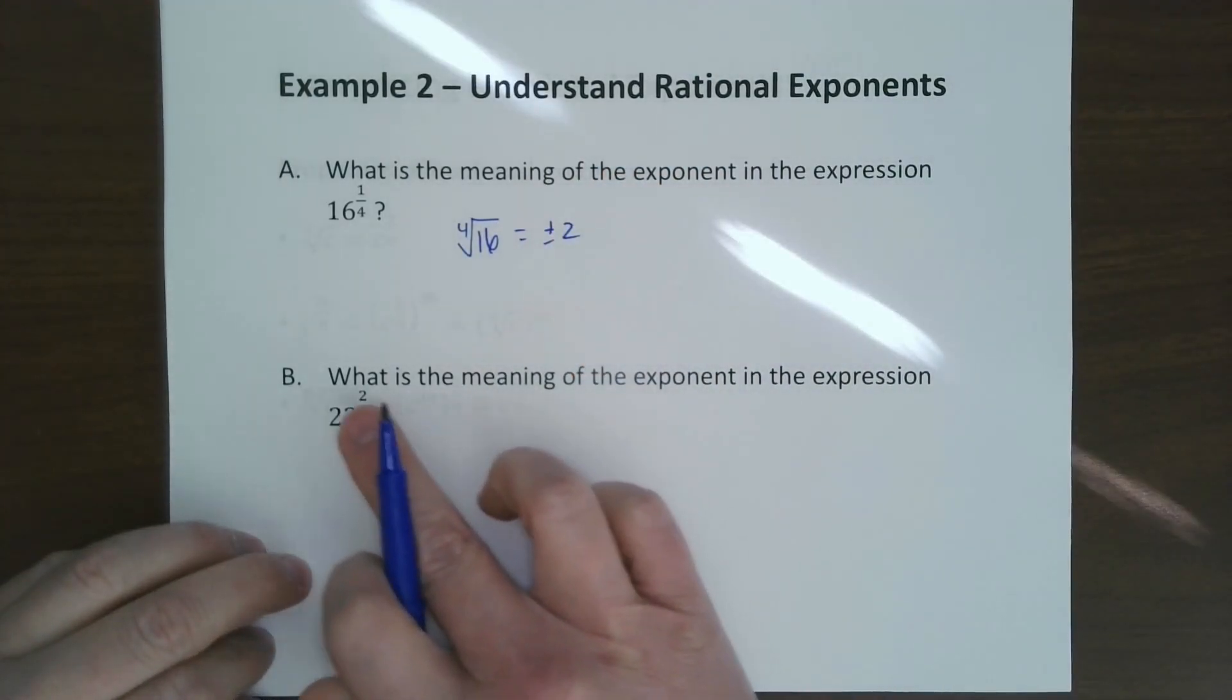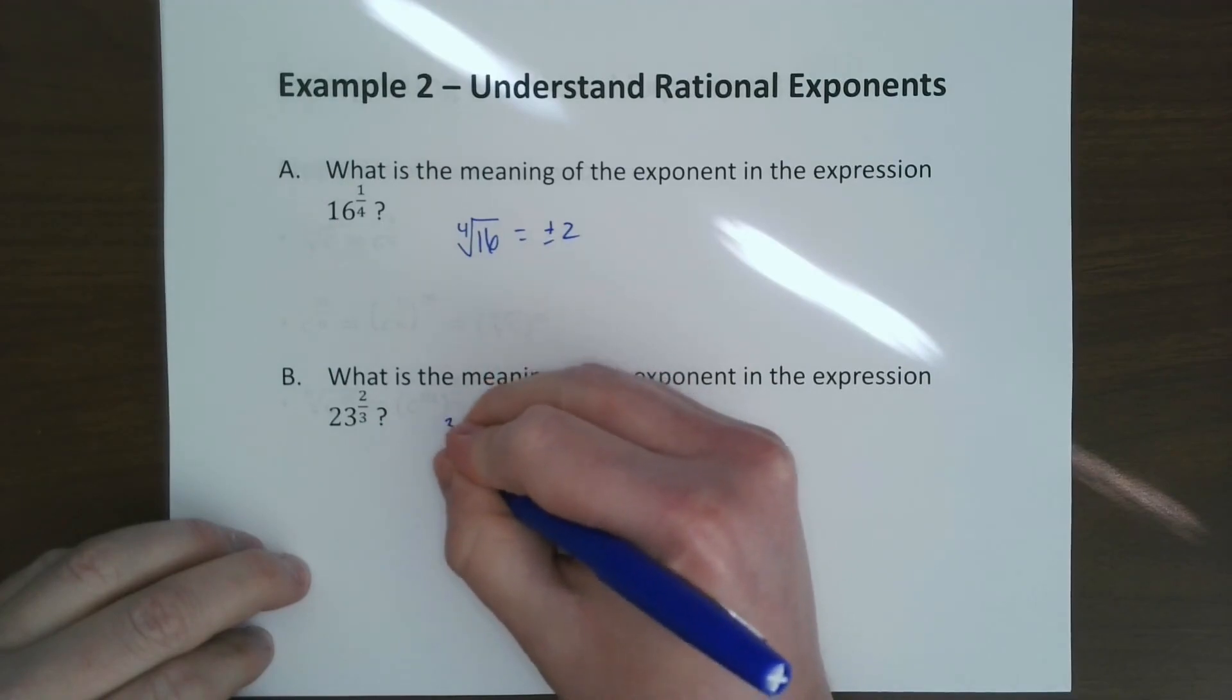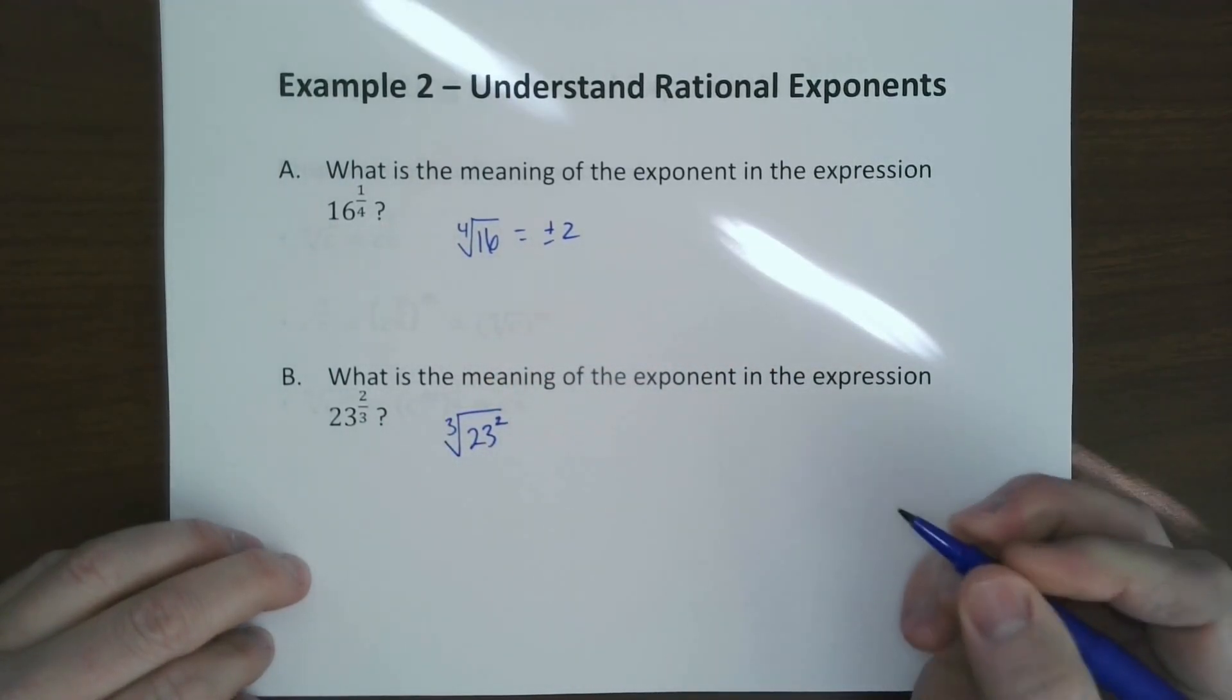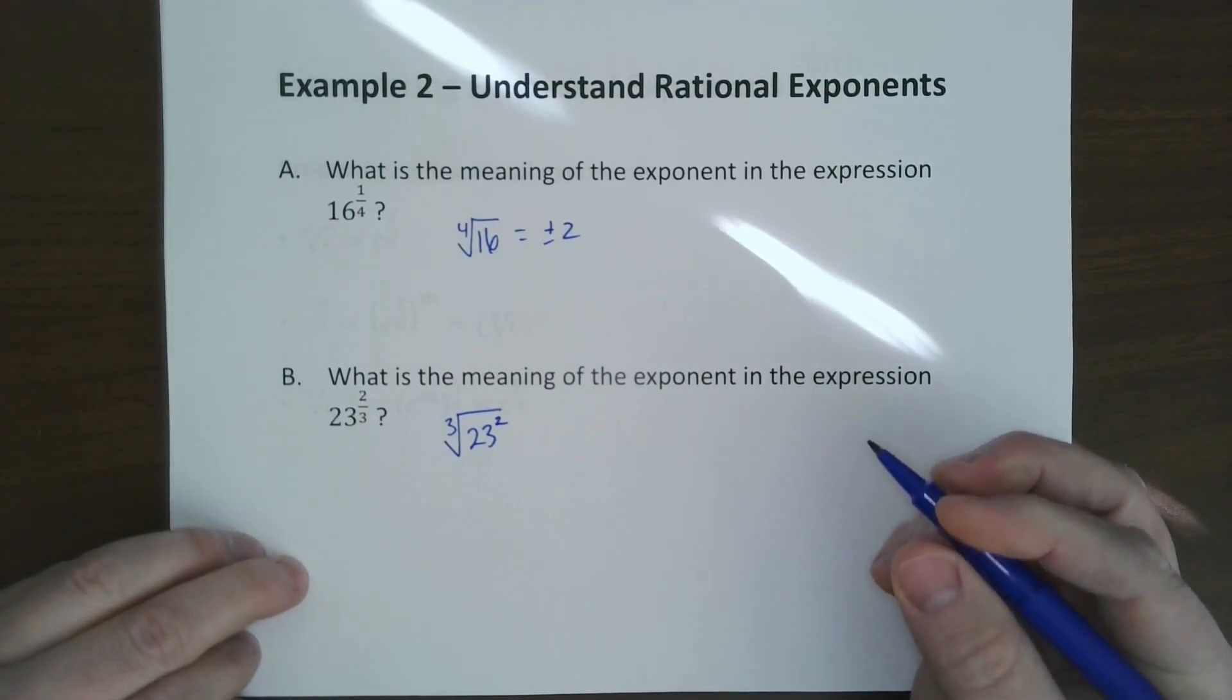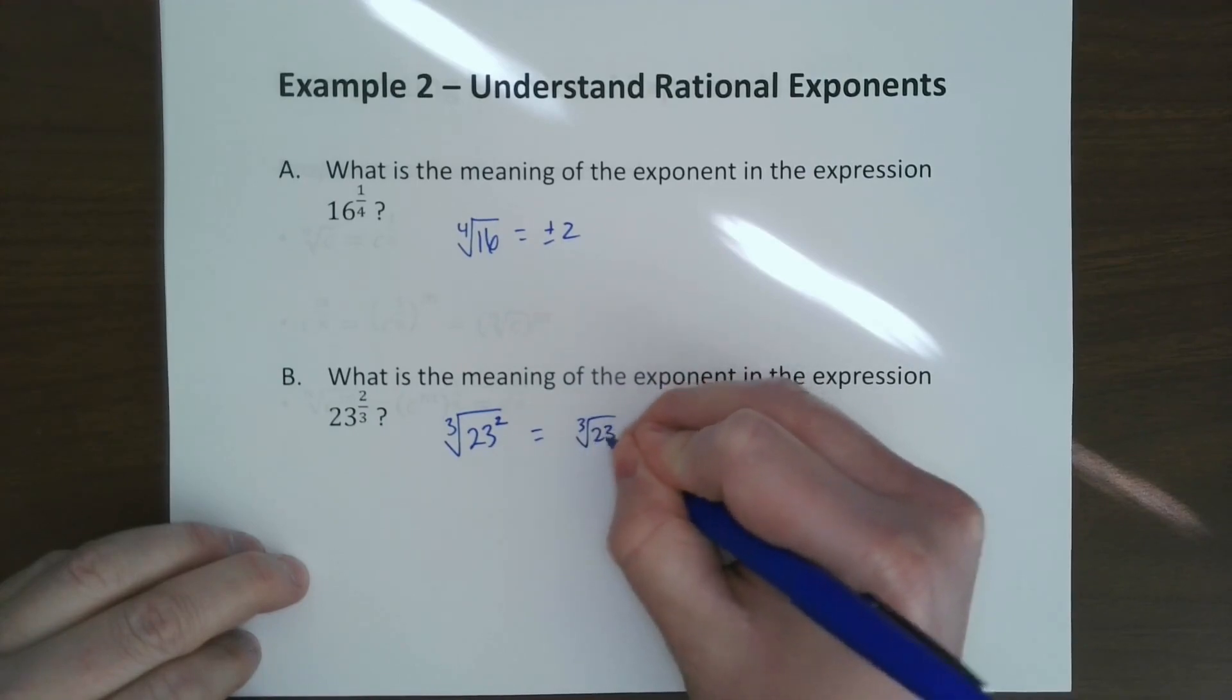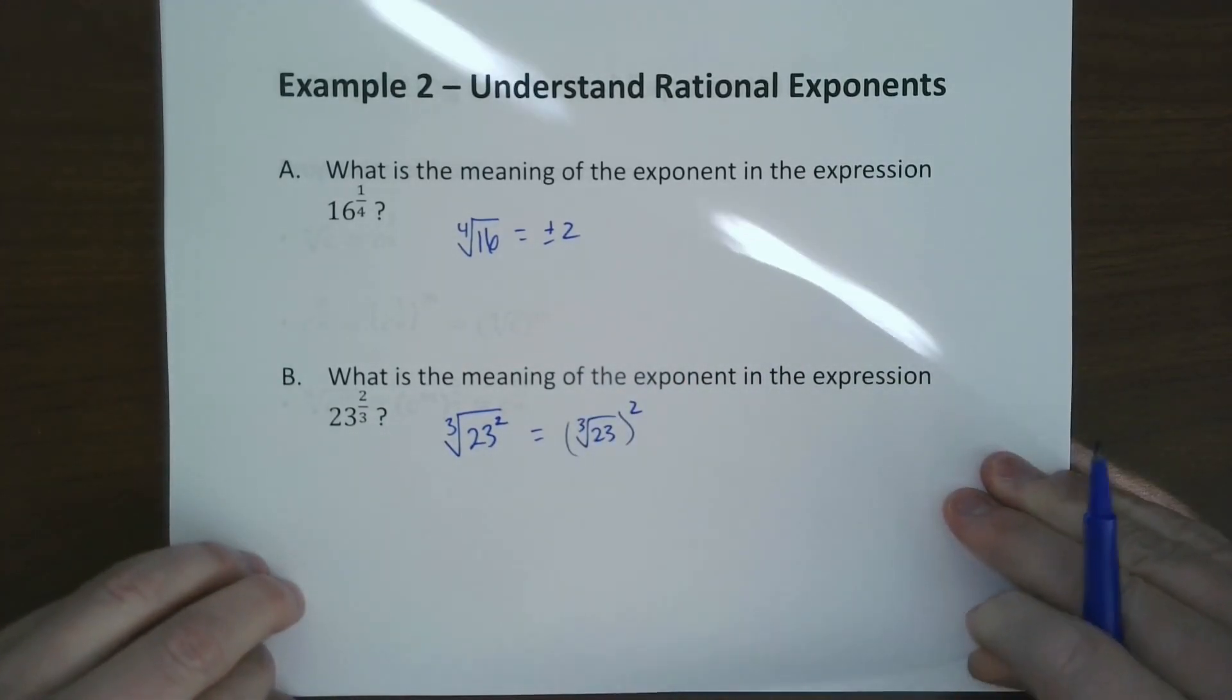If it's got a number on top, that means we're going to take the third root, but we're also going to square it. So this is the third root of 23 to the second power. You can look at it that way or you can look at it as the third root of 23 and then square. It's the same thing.